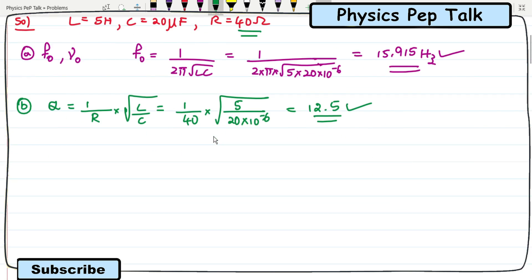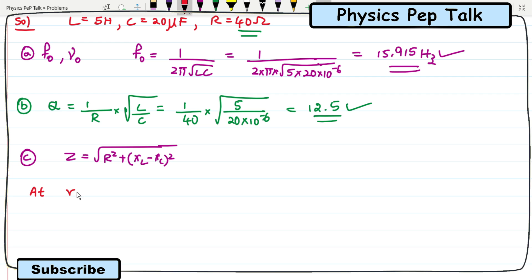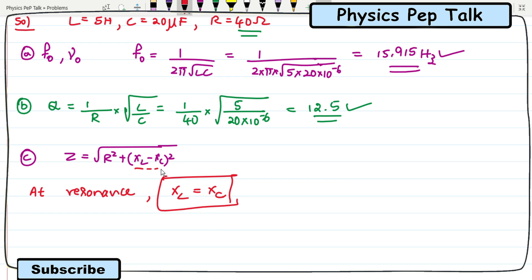For part C, impedance at resonant condition. The formula for impedance is Z is equal to root of R square plus XL minus XC the whole square, where XL is inductive reactance and XC is capacitive reactance. At resonance, the value of XL will be equal to XC. So XL minus XC will be equal to zero, and in that case Z will be equal to root of R square, which is simply R. So at resonant condition Z is equal to R, which is 40 ohms.